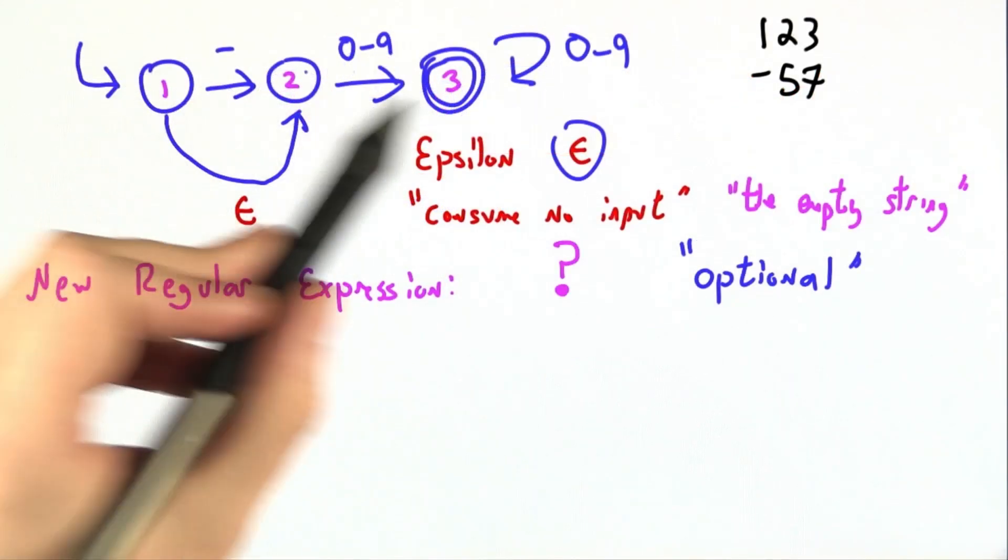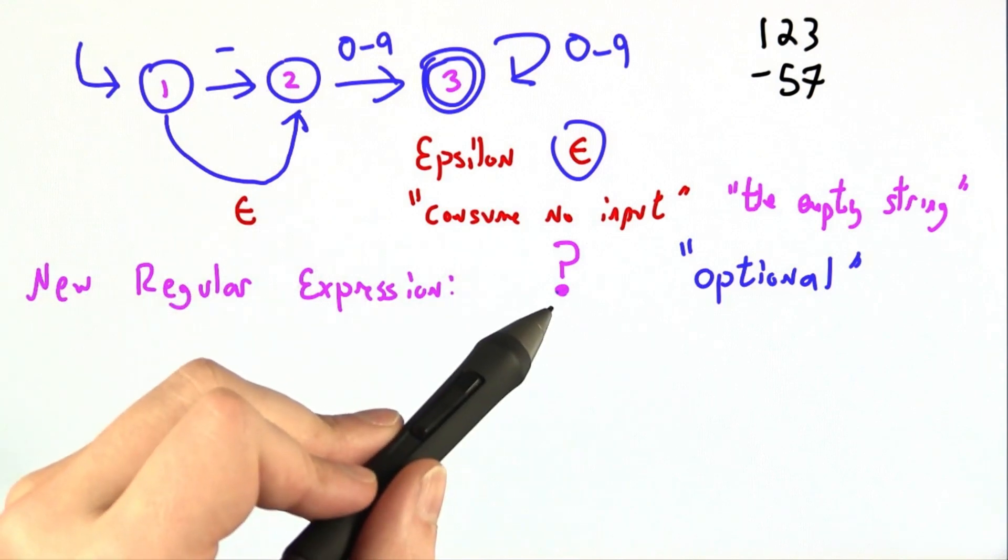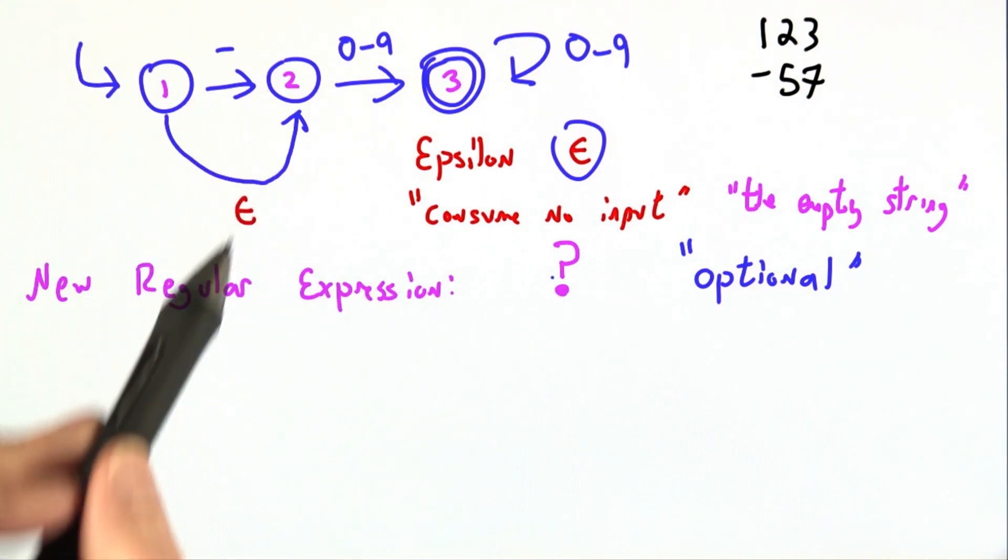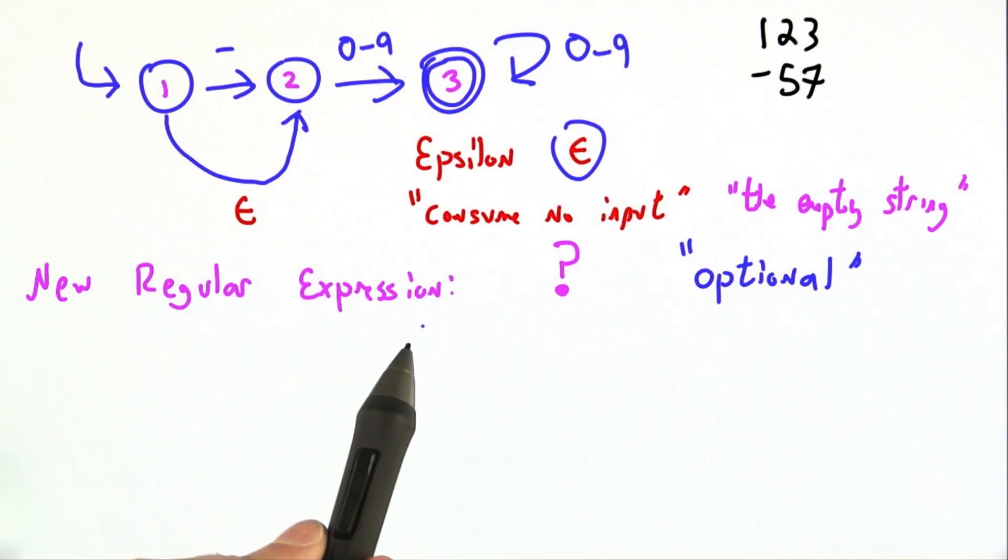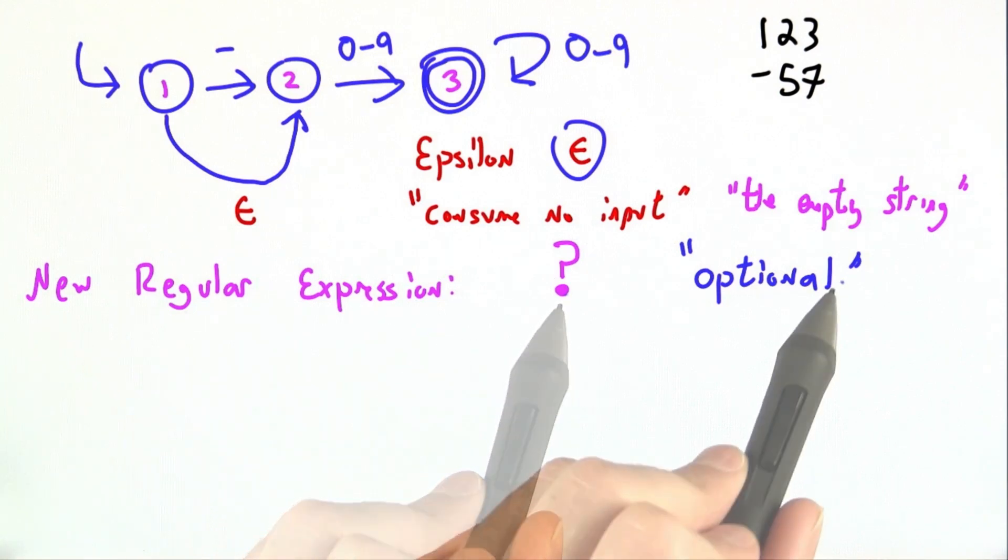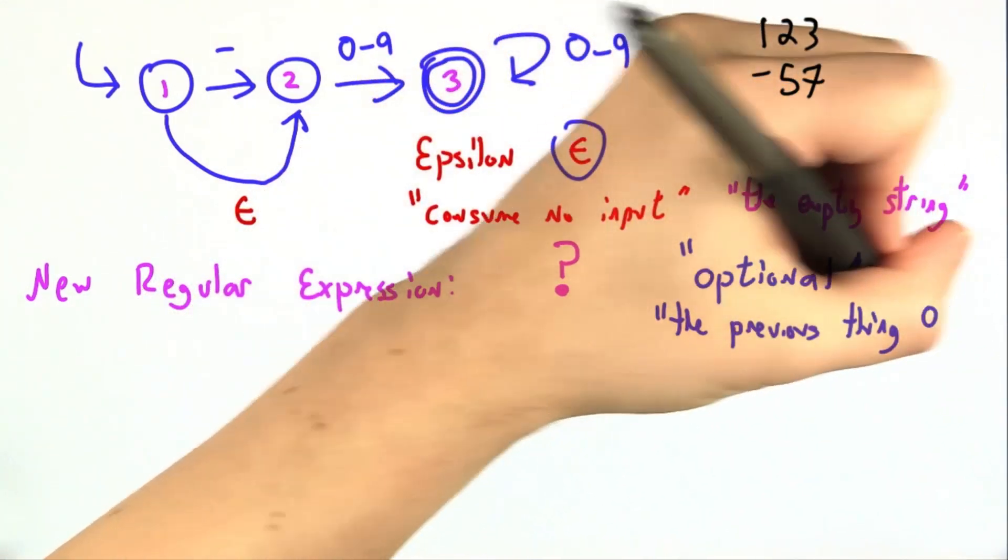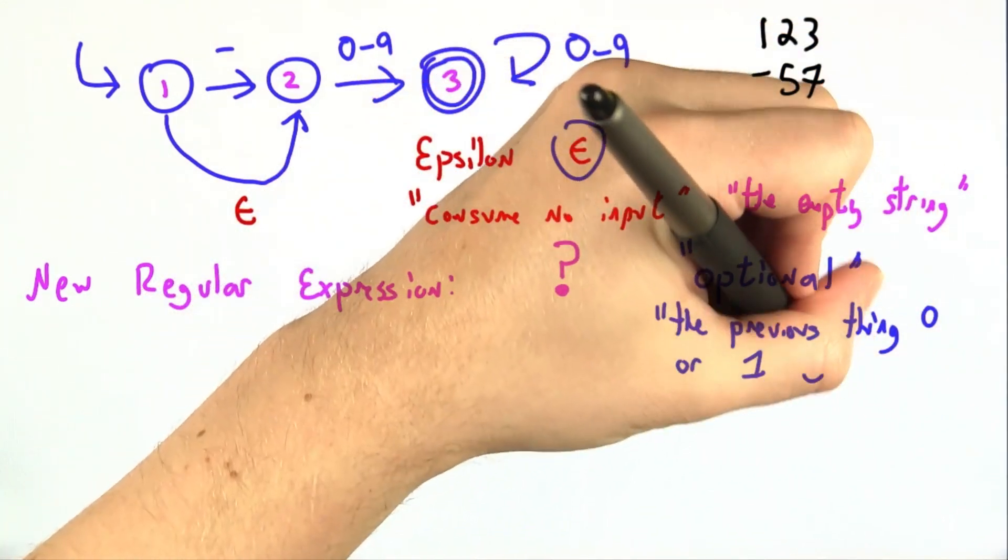Continuing our theme that anything that can be done in finite state machines can be done in regular expressions and vice versa, we'll firm that up later on. I'm going to give you a new regular expression, the question mark, which we typically read as optional or the previous thing 0 or 1 times.